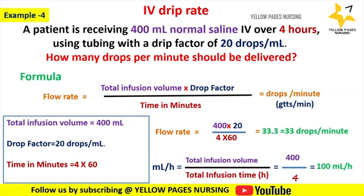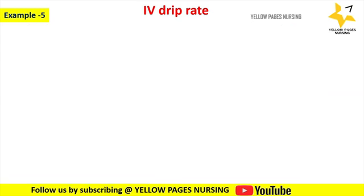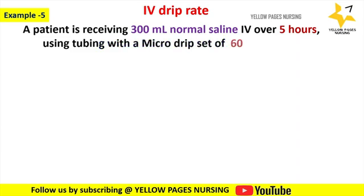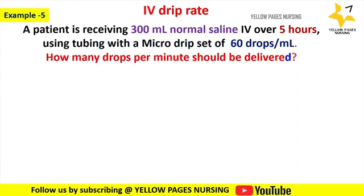In case of maintaining an hourly intake-output chart, this formula is very useful to calculate the hourly intake in ml per hour. One more example for calculating IV drip rate: a patient is receiving 300 ml normal saline IV over 5 hours using tubing with a micro drip set of 60 drops per ml — how many drops per minute should be delivered?